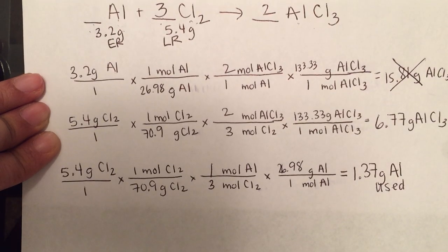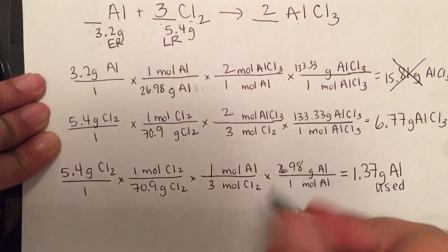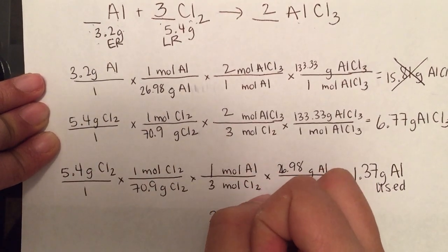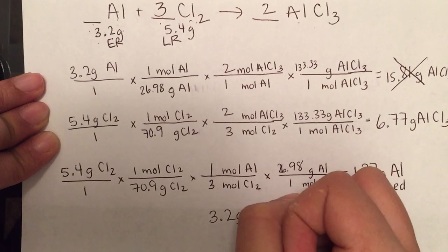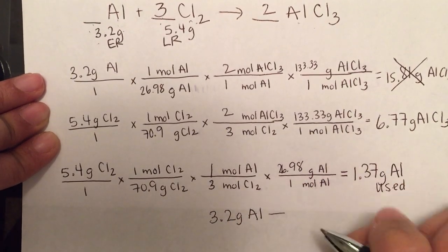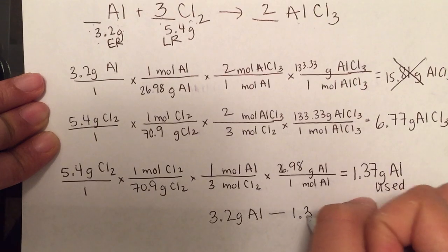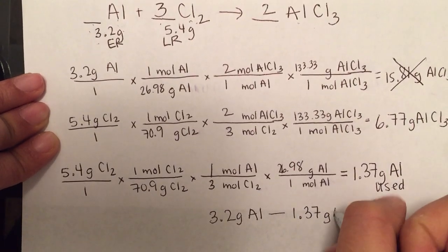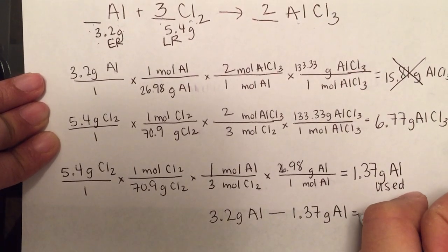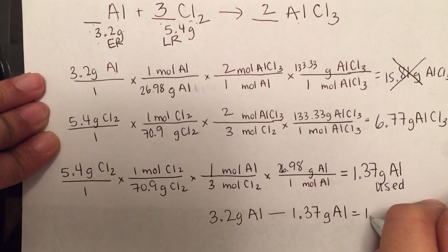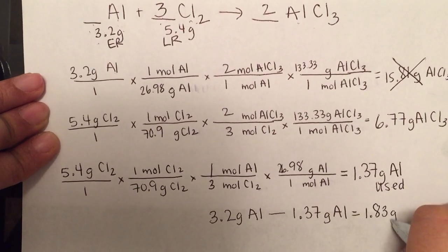We want to know what remains. So the last step that we're going to have to do here is take what we were given, which was 3.2 grams of aluminum. We're going to subtract what's used, which is 1.37 grams of aluminum.